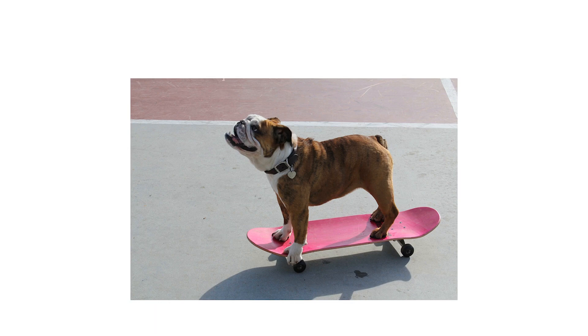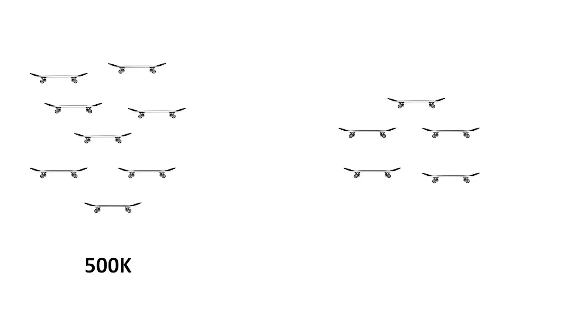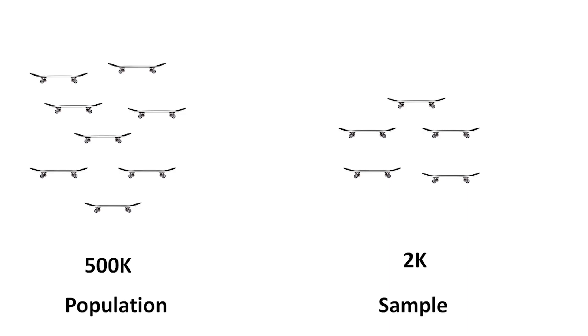That skateboard company wants to measure the strength of its skateboards. It makes 500,000 skateboards per year. You just can't go and break each and every skateboard to measure the average strength. Instead, you take a sample of skateboards, break them using a press or a machine, and find out their strength — that's how you determine how much load a skateboard can handle.